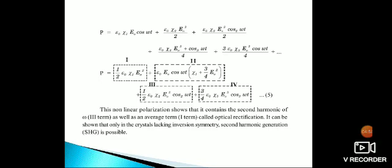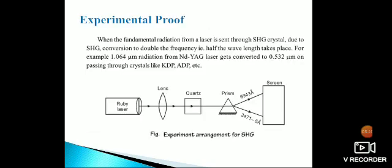This nonlinear polarization shows that it contains the second harmonic of ω (the third term) as well as the average term (the first term) called optical rectification. It can be shown that only in crystals lacking inversion symmetry, second harmonic generation (SHG) is possible.